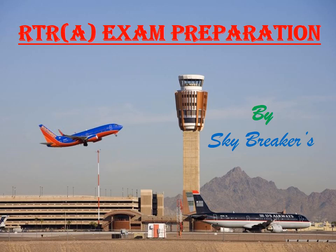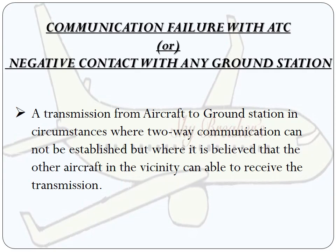In this video I would like to explain how to communicate or make procedure when there is no contact with any ground station. Ground station means the air traffic controller. When you are attending the RTR exam, in the question paper the question might be written as 'communication failure with ATC' or 'negative contact with any ground station.' This is the definition you should know, because once you clear part one, when you attend for the viva — that is part two — the examiner may ask: what is the definition of negative contact with ATC?